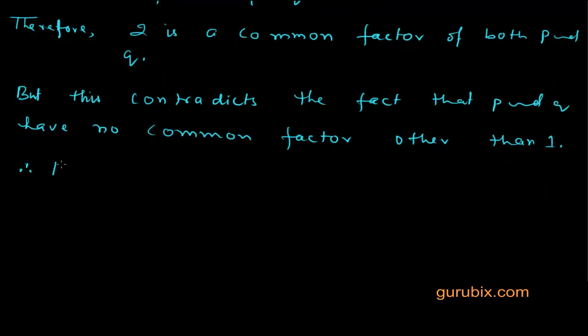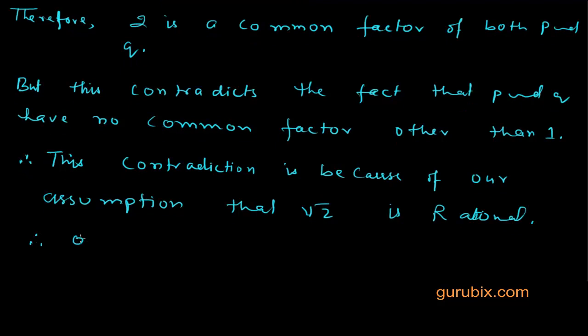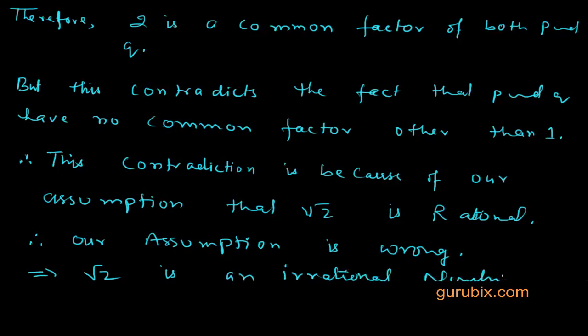Therefore, this contradiction is because of our assumption that √2 is a rational number. So our assumption was wrong. This is the proof.